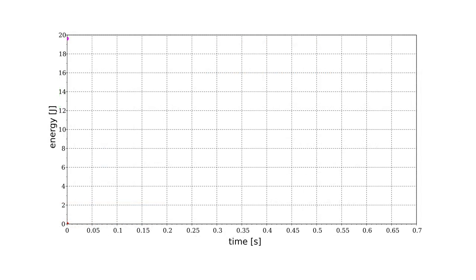Suppose we raise a one kilogram mass to a height of two meters. The required work is just a bit less than twenty joules, and this is the initial potential energy of the mass. If we let the mass fall, the potential energy starts decreasing from this initial value, while the kinetic energy starts increasing from zero. Their sum, the total energy of the mass, remains constant, equal to the initial work done on the system.